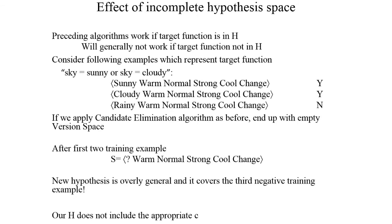Consider the effect of an incomplete hypothesis space. Suppose only two positive samples are given and the target is that the sky is sunny or cloudy. If we apply the Candidate Elimination Algorithm without the third (negative) example, we end up with an empty version space. The hypothesis covers the third negative training example, meaning our hypothesis space does not include the appropriate target concept.